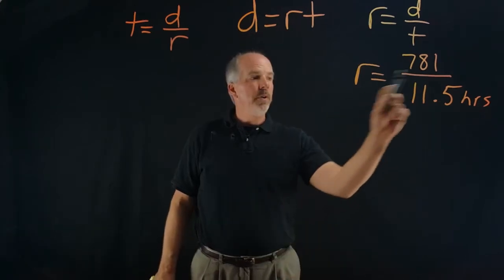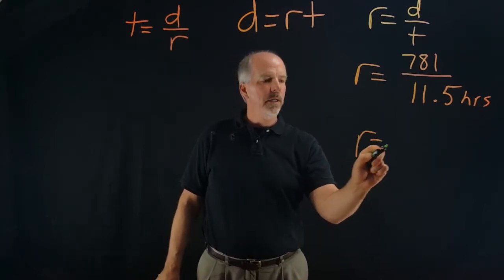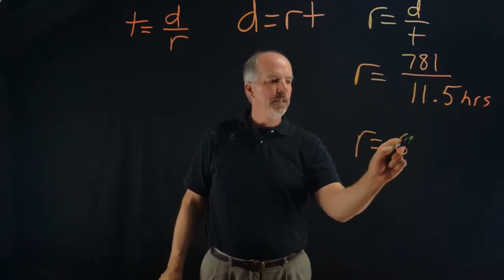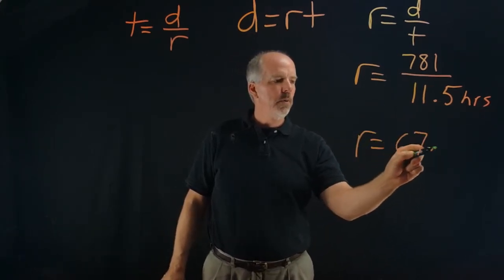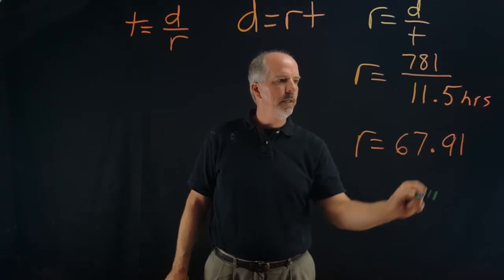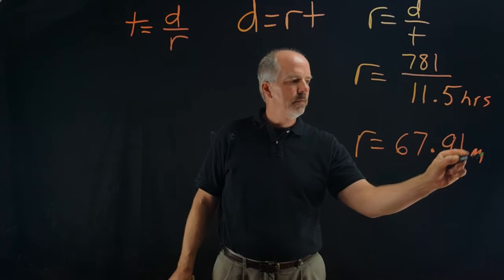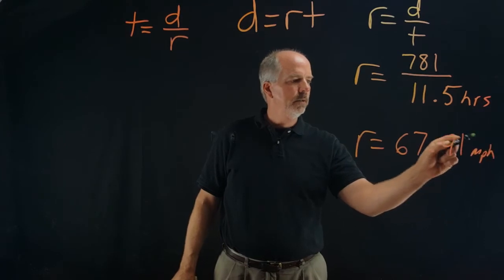So if we do the division, R equals 67.91 miles per hour.